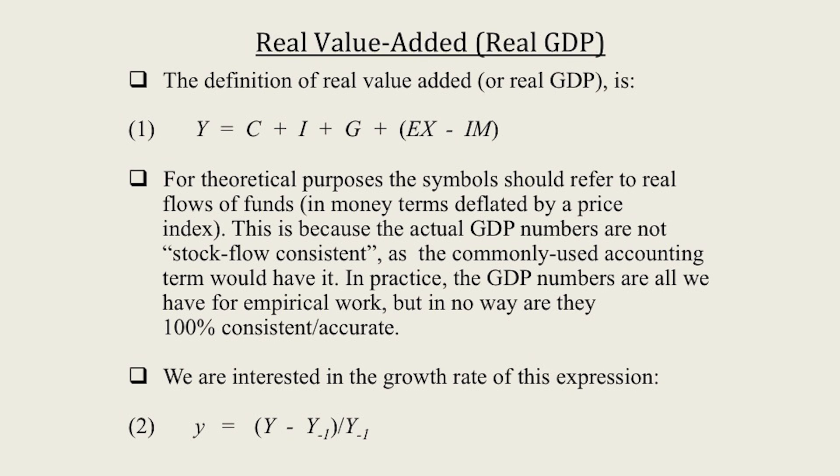Throughout this course we've been primarily interested in the growth rate of the expression, that is lowercase y, which is simply the growth rate of real GDP. The Keynes-type growth theory can be derived by adding a lagged consumption function — a straightforward Keynesian consumption function. It was Hicks's idea that it should depend on lagged income rather than current income. C0 is the intercept term, autonomous spending; C1 is the marginal propensity to consume out of lagged disposable income.